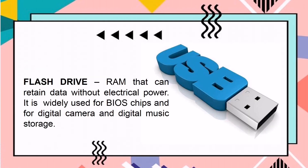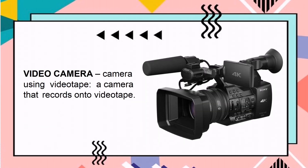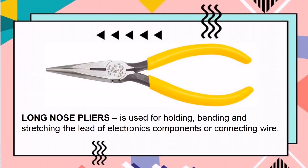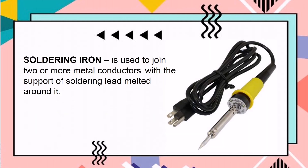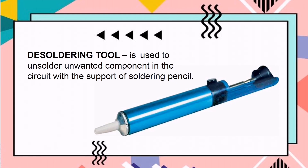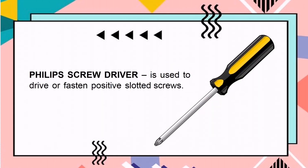Flash drive is RAM that can retain data without electrical power. It is widely used for BIOS chips and for digital camera and digital music storage. Video camera is a camera that records onto videotape. Long nose pliers are used for holding, bending, and stretching the leads of electronic components or connecting wires. Soldering iron is used to join two or more metal conductors with the support of soldering lead melted around it. The soldering tool is used to unsolder unwanted components in the circuit with the support of a soldering pencil. Phillips screwdriver is used to drive or fasten positive-slotted screws.